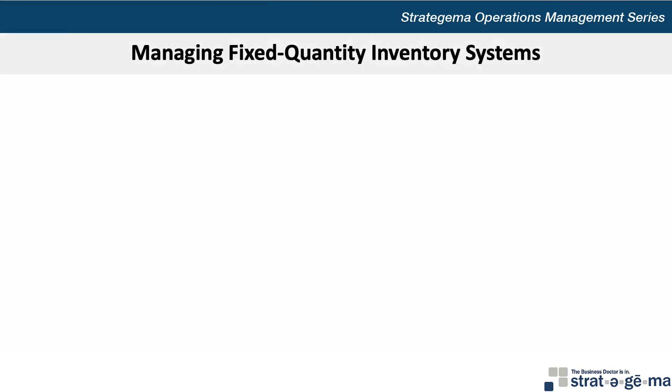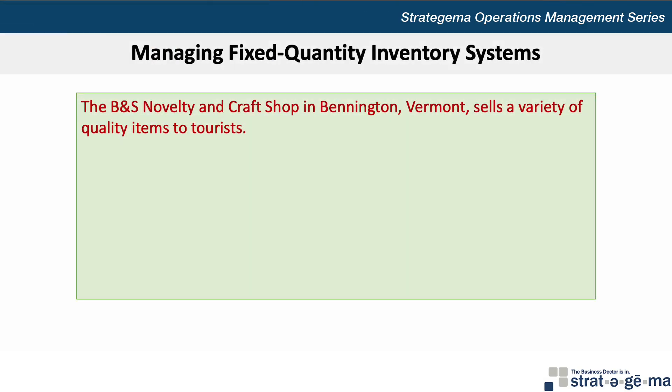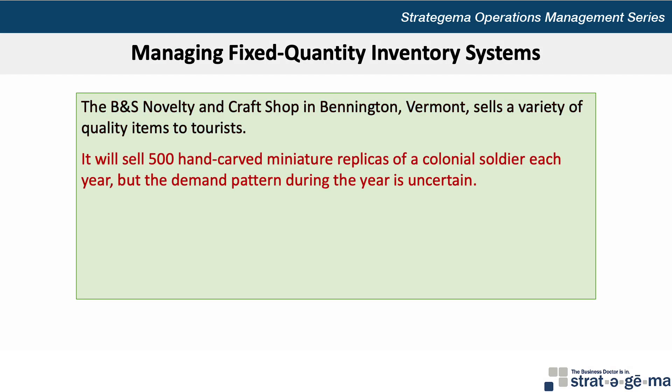Here's the data for our problem. The B&S Novelty and Craft Shop in Bennington, Vermont sells a variety of quality items to tourists. It will sell 500 hand-carved miniature replicas of a colonial soldier each year, but the demand pattern during the year is uncertain. The replicas sell for $12 each, and B&S uses a 25% annual inventory holding cost rate.